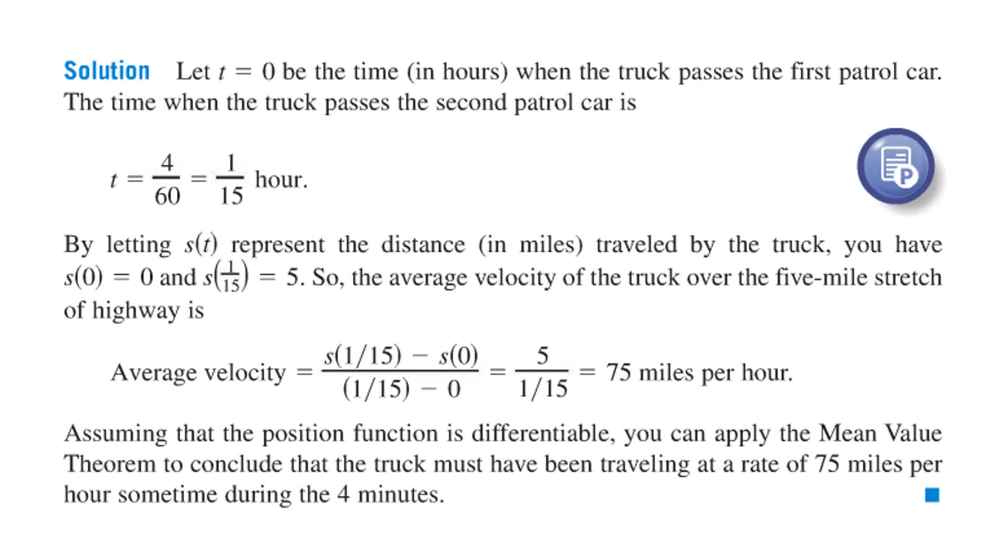Here's the solution. We're going to let t equals zero be the time when the truck passes the first car and the time when it passes the second car then is, let's see they were separated, so the time it passes the second car is 4 over 60 or 1 over 15 hours. So we're going to let s of t represent the distance in miles traveled by the truck and notice that we have these are the values at zero and at 1 over 15 hour. So the average velocity of the truck is given by we just use the slope of this and the average velocity was 75 miles per hour.